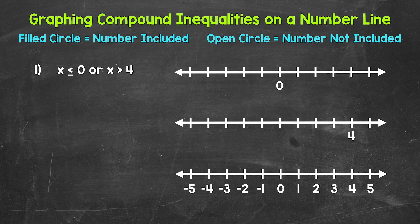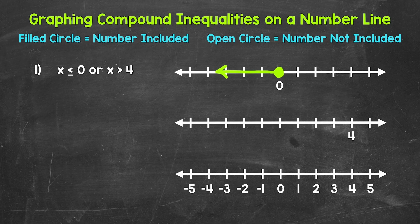We're going to break this down into two graphs first in order to better understand what we're working with, then combine everything into one. Let's start with x is less than or equal to zero. Zero is included, so we need a filled circle at zero and then an arrow going left, representing everything less than zero. So zero is a solution and anything less than zero.